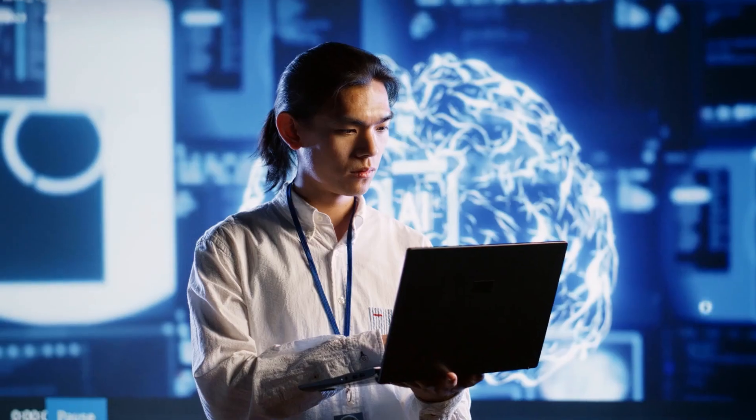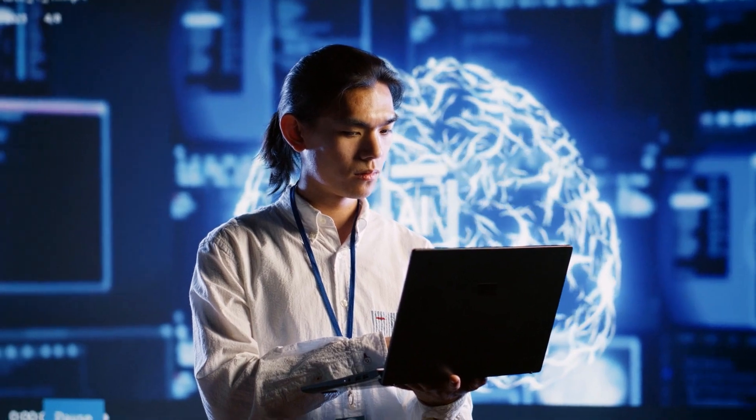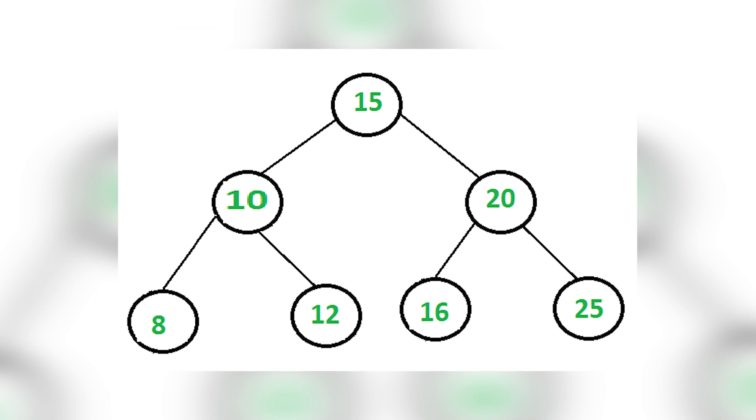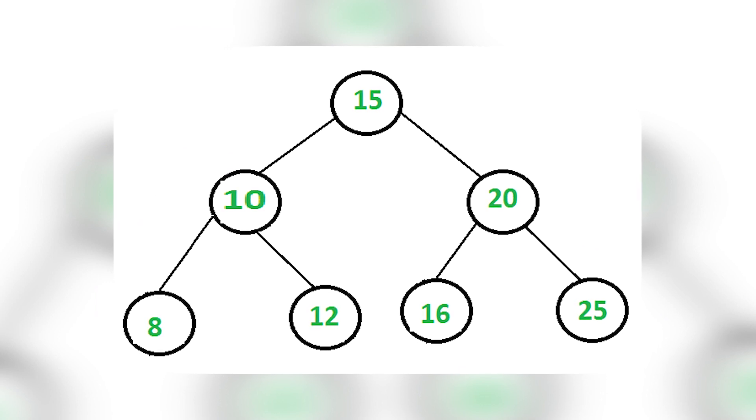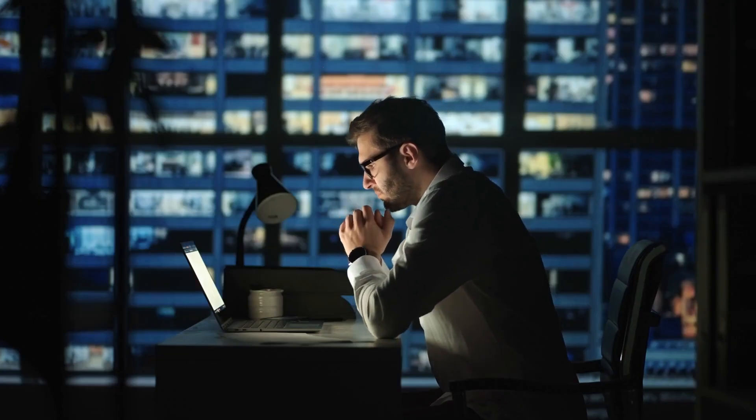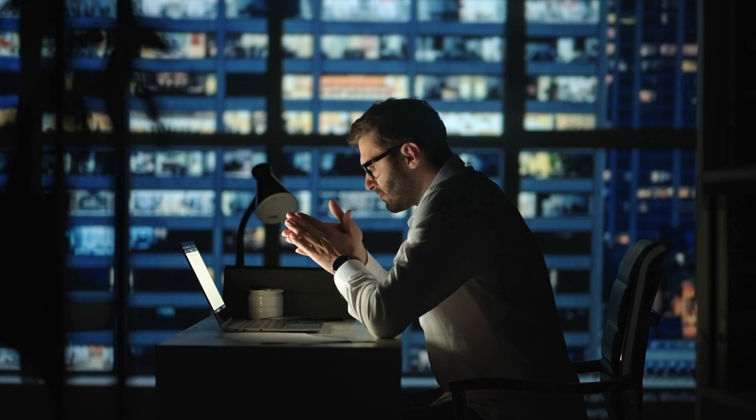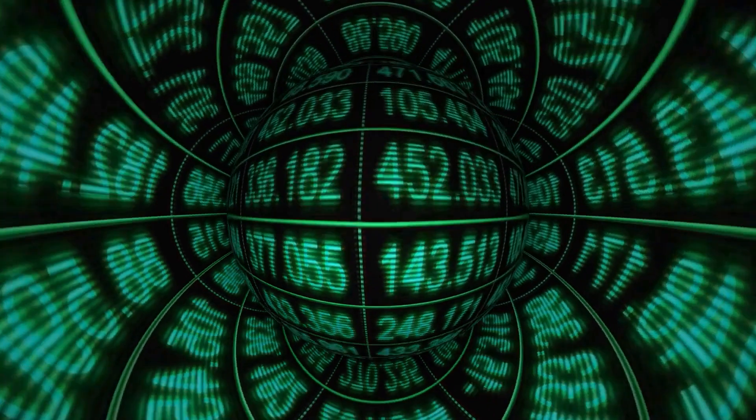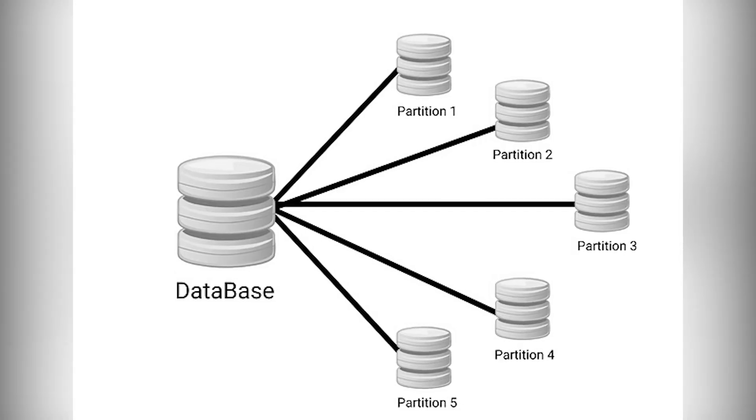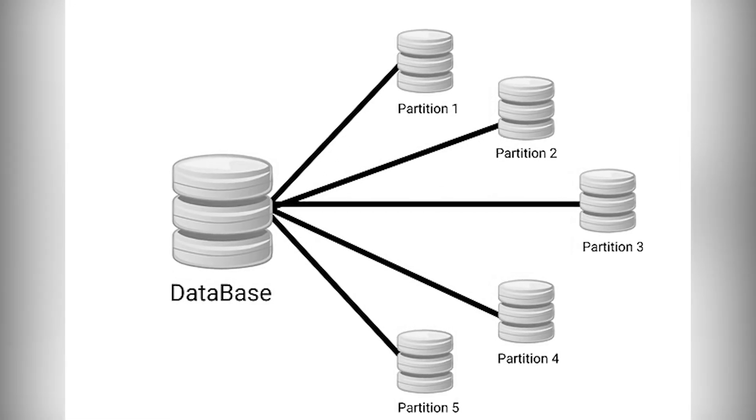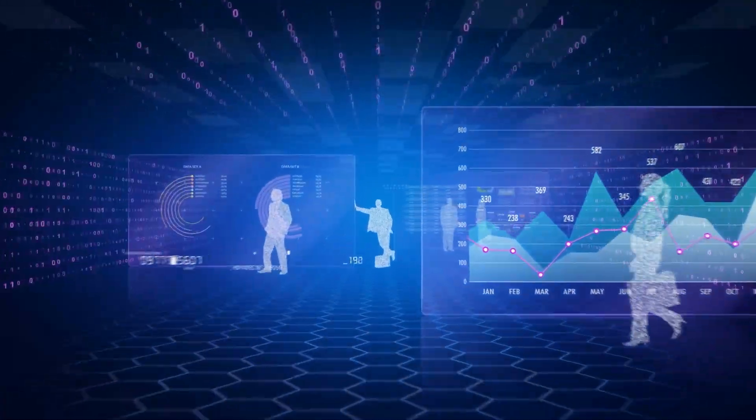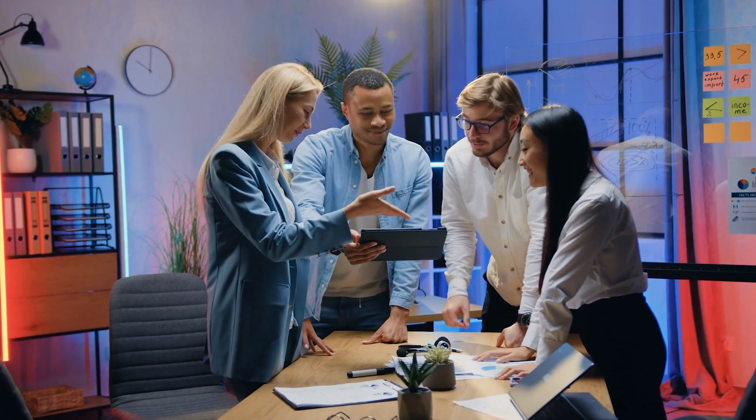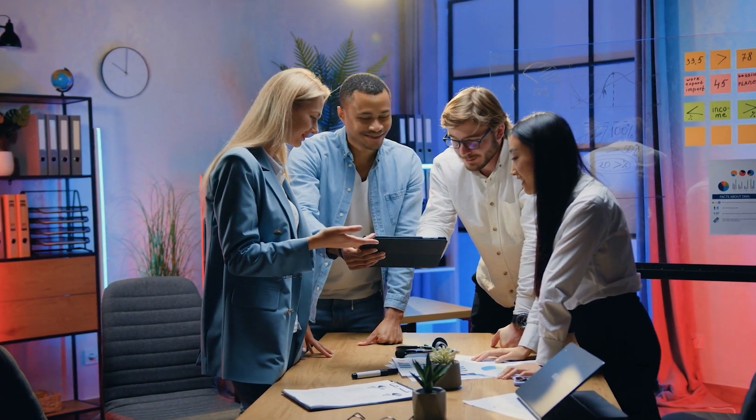Decision trees are adaptable supervised learning algorithms that make decisions using a tree-like model. Each internal node is a feature or attribute, and each leaf node is a class label or a decision. Decision trees are simple to understand and can deal with both category and numerical data. They partition the data recursively based on the specified features, attempting to maximize information gain or decrease impurity at each step.